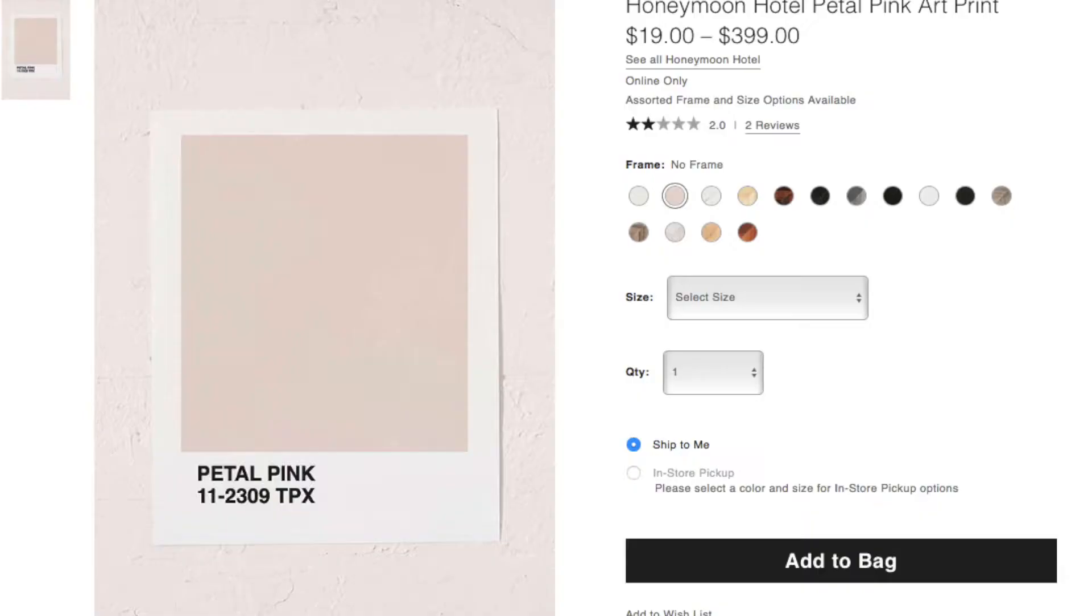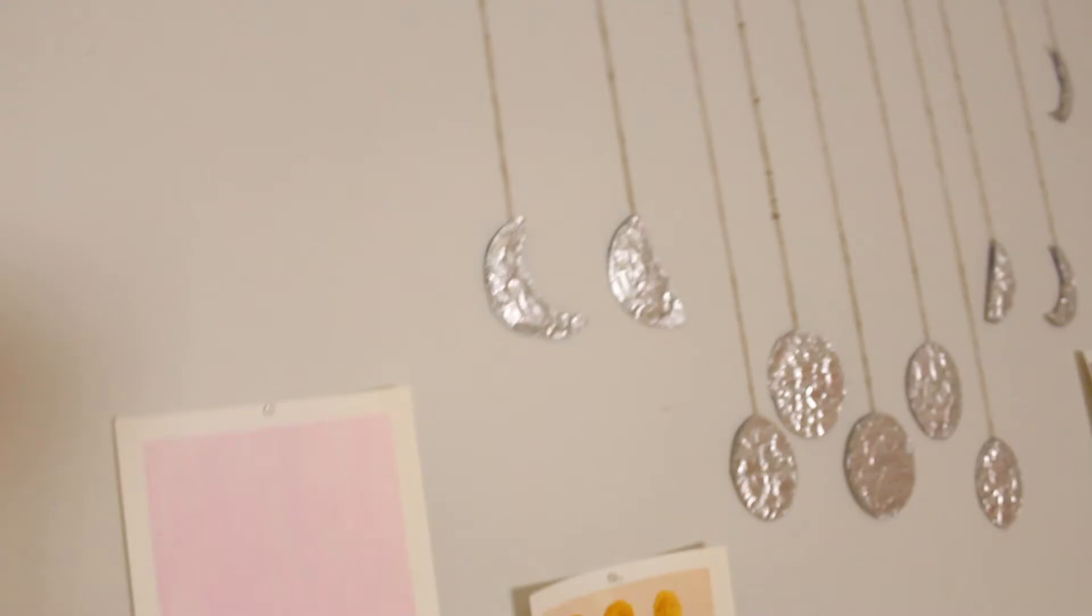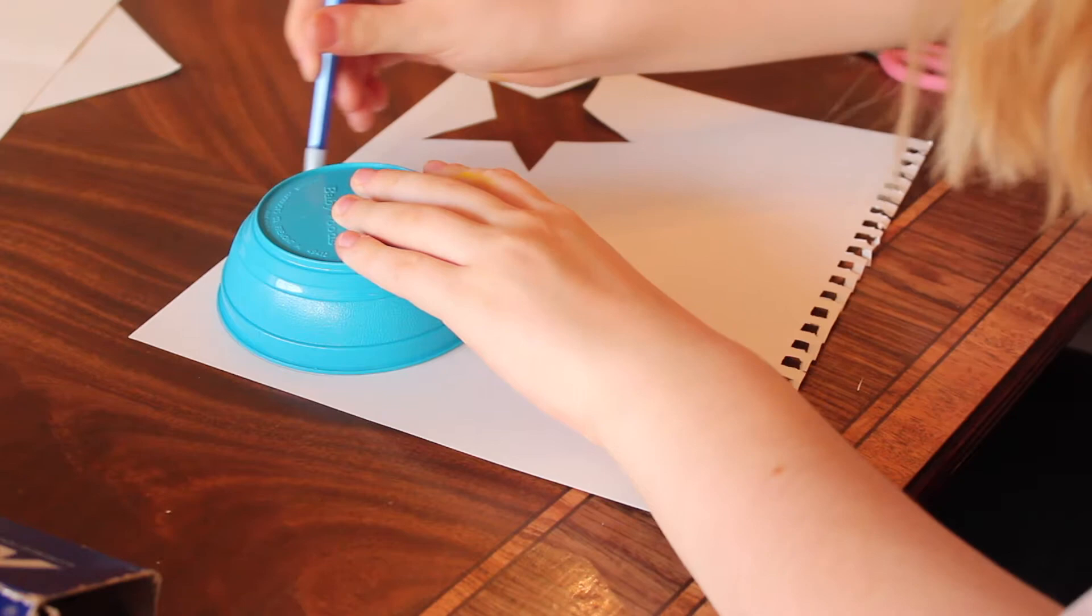Now we have just the pink area. I traced out the lettering in pencil—it says "petal pink." Here's the original Urban Outfitters artwork.